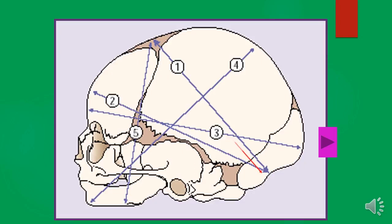The first diameter we are going to focus on is the suboccipital bregmatic, which is about 9.5 centimeters. This is measured from below the occipital protuberance to the center of the anterior fontanelle, or the bregma. So it goes from the occipital protuberance to the bregma, and this is about 9.5 centimeters.